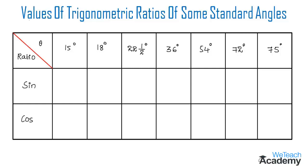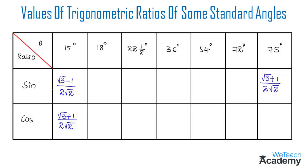Now let us write the values of sine and cosine for these standard angles, which we already proved in previous videos. Sine 15° = (√3 − 1) / (2√2), and cos 15° = (√3 + 1) / (2√2). Since cos 15° equals sine 75°, we get sine 75° = (√3 + 1) / (2√2), and cos 75° = (√3 − 1) / (2√2).